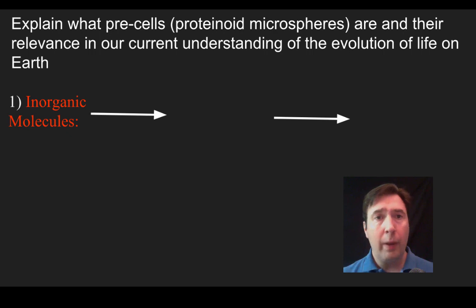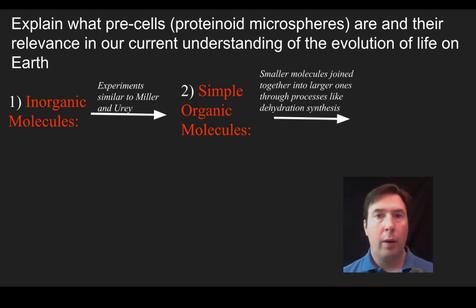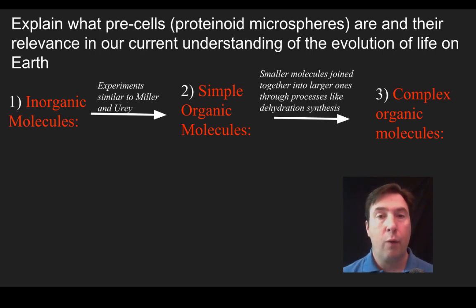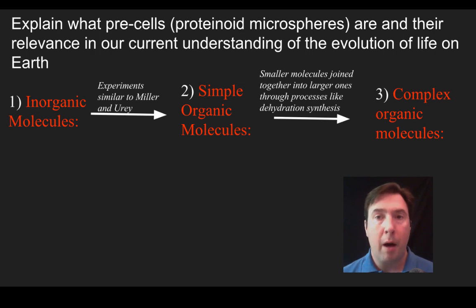How does this fit into a larger picture? We now know that if you take inorganic molecules and run experiments similar to Miller-Urey, you can create simple organic molecules. And if you take those simple organic molecules — things like monosaccharides, amino acids, nitrogenous bases or nucleotides that make up DNA, and fatty acids and glycerols — and undergo dehydration synthesis, you can make the complex organic molecules. The four macromolecules of life in polymer state are formed through dehydration synthesis. This is a model — I would call it a hypothesis — for how the first complex organic molecules could have formed in the early Earth's atmosphere, but we don't have concrete evidence it's exactly how it occurred.